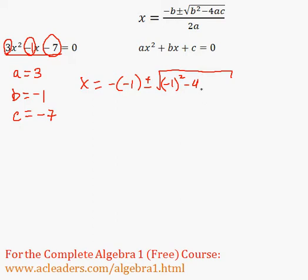And a is just 3, and c is negative 7. All over 2a.